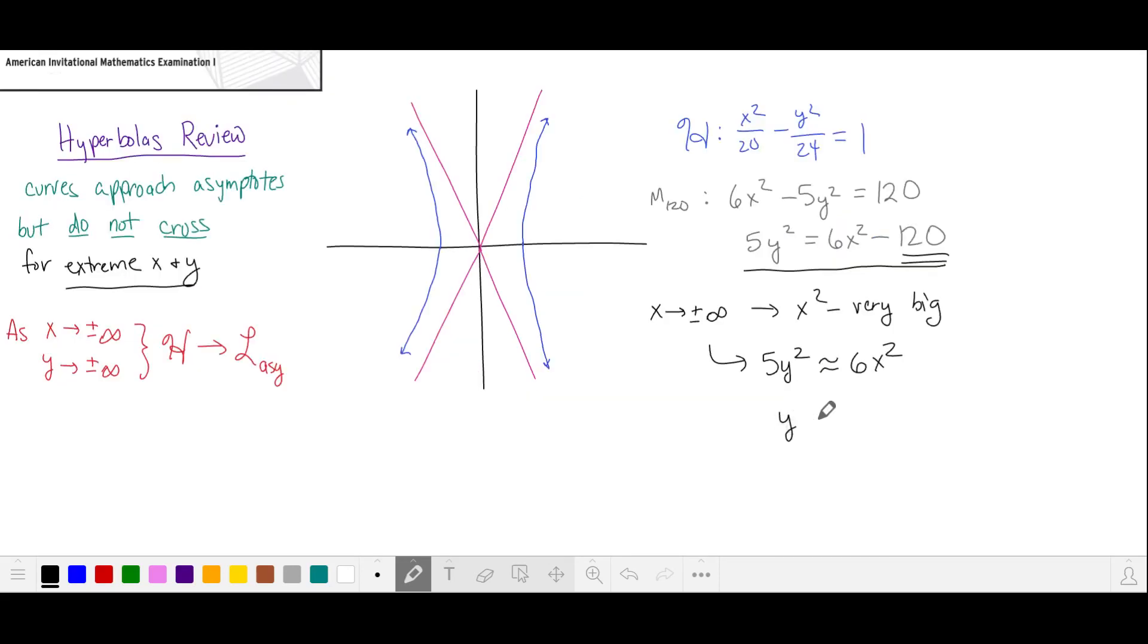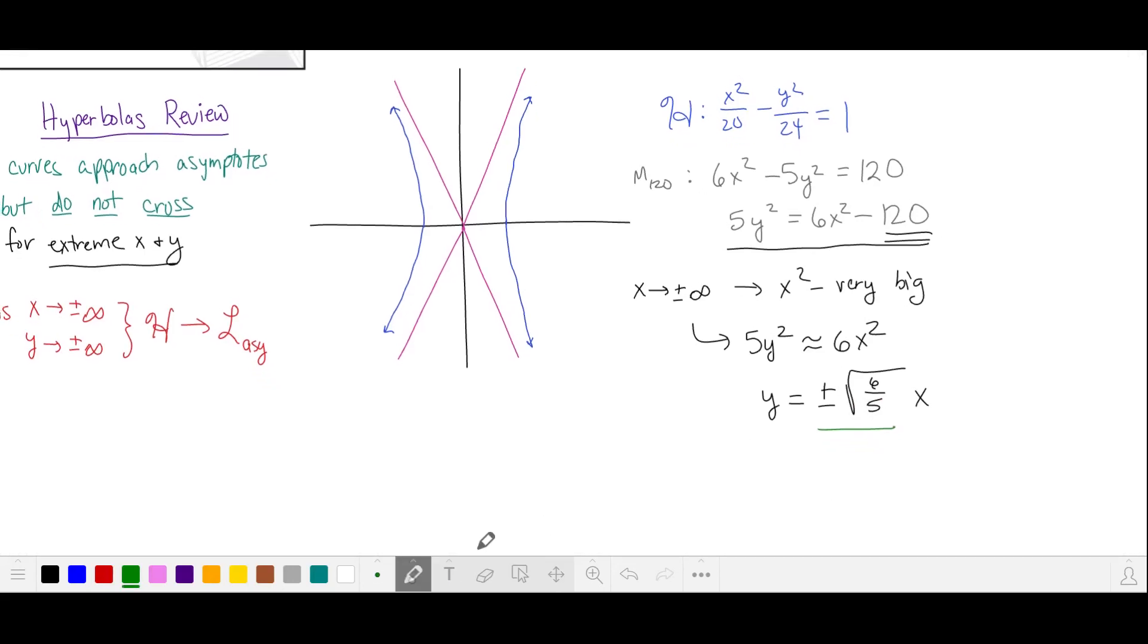Solving for y with this approximation, we get y is equal to plus or minus the square root of 6 over 5 times x. We have two slopes for our two asymptote lines. We'll call m₁ the positive square root of 6 fifths and m₂ will be the negative square root of 6 fifths. With a positive slope, that means this has a slope of m₁ and this is the line with a slope of m₂.